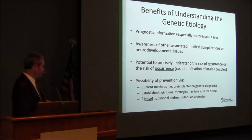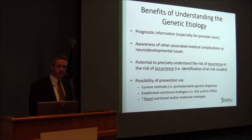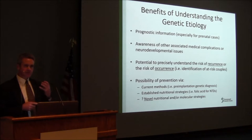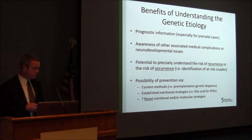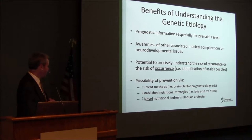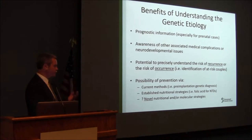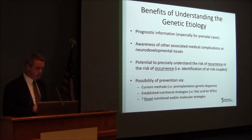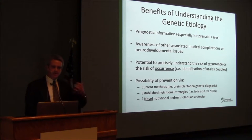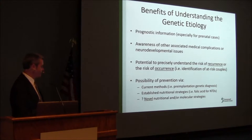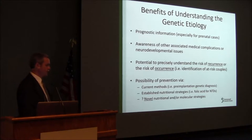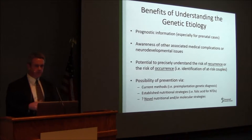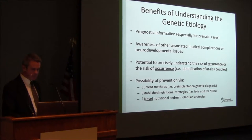Current methods, for example, would include pre-implantation genetic diagnosis using genetic information, but you obviously have to know the exact genetic cause for that to be successful. There are also established nutritional strategies — the best example being folic acid for neural tube defect prevention. But the way I like to think about it: a better understanding of the genetic underpinnings and developmental pathways could give us insight into novel nutritional or molecular strategies, essentially as therapies to try to prevent the occurrence or recurrence of these malformations.